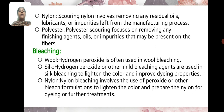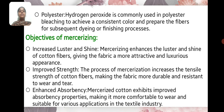Nylon: Nylon bleaching involves the use of peroxide or other bleaching formulations to lighten the color and prepare the nylon for dyeing or further treatment. Polyester: Hydrogen peroxide is commonly used in polyester bleaching to achieve a consistent color and prepare the fabric for subsequent dyeing or finishing processes.